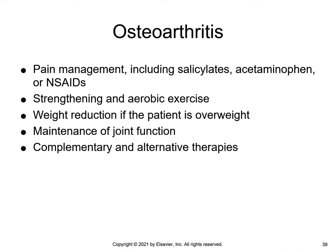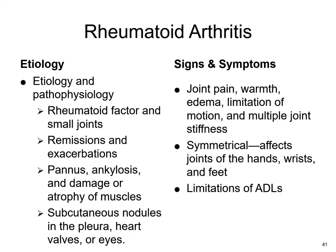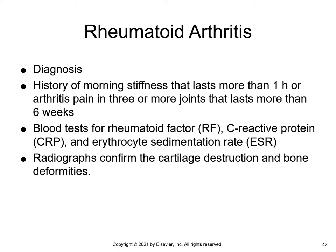Acetaminophen in doses of 1,000 mg up to 3,000 mg per day is the standard for patients with mild to moderate chronic joint pain. Weight reduction will help decrease the amount of stress on weight-bearing joints. Maintaining mobility and controlling pain with the least amount of side effects are goals for the older adult with rheumatoid arthritis. Diagnosis is by the history of a morning stiffness that lasts more than one hour or arthritis pain in three or more joints that lasts more than six weeks.